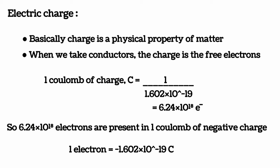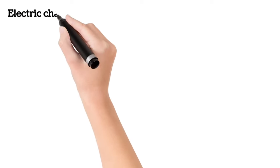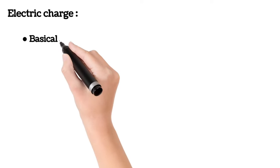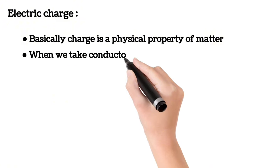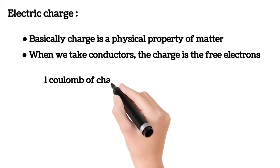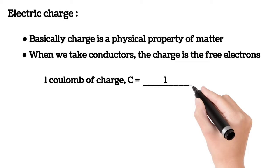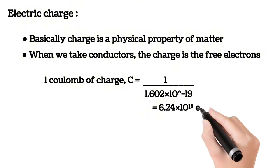Electric charge is a physical property of matter. In conductors, the charge carriers are free electrons. 1 coulomb of charge equals 1 / (1.602 × 10⁻¹⁹) electrons, which is equal to 6.24 × 10¹⁸ electrons present in 1 coulomb of negative charge. Therefore, 1 electron equals −1.602 × 10⁻¹⁹ coulombs.